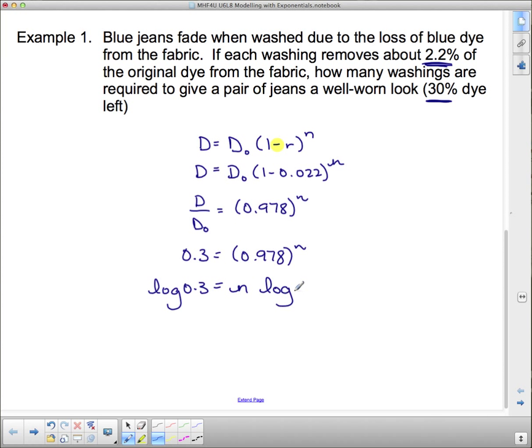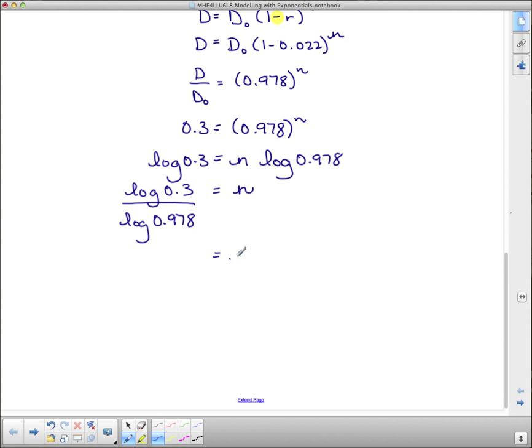Since we know how to use logarithms I can now actually just take the log of both sides and I'll be able to get that n out of the exponent. So we've got the log of 0.3 will equal n times the log of 0.978. And now we'll divide both sides by the log of 0.978, so I get the log of 0.3 divided by the log of 0.978.